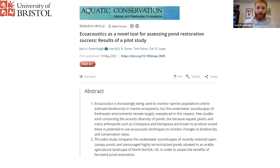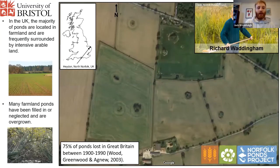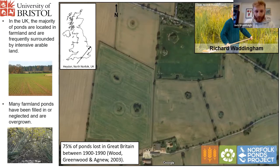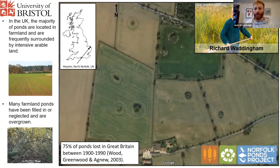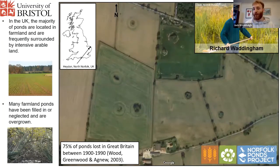I'm going to touch on some of my research using a slightly different approach to characterize the restoration success of ponds. In the UK, a lot of our ponds are located on farmland and surrounded by intensive arable land, so ponds become incredibly important oases of life in an otherwise quite barren landscape. However, many farmland ponds have been filled in or neglected. These old farmland ponds used to be marl pits or clay pits used to make bricks and to lime fields — to fertilize them, basically.